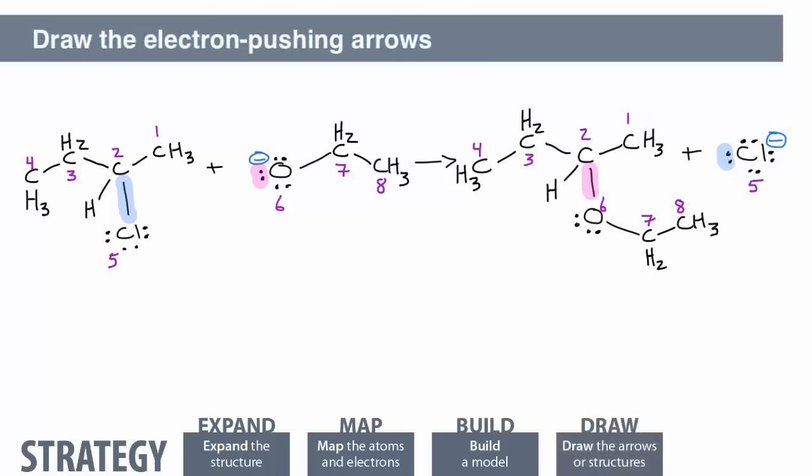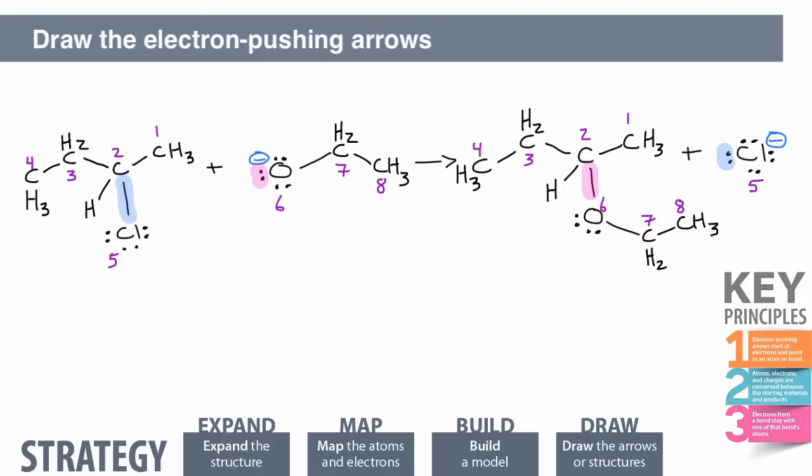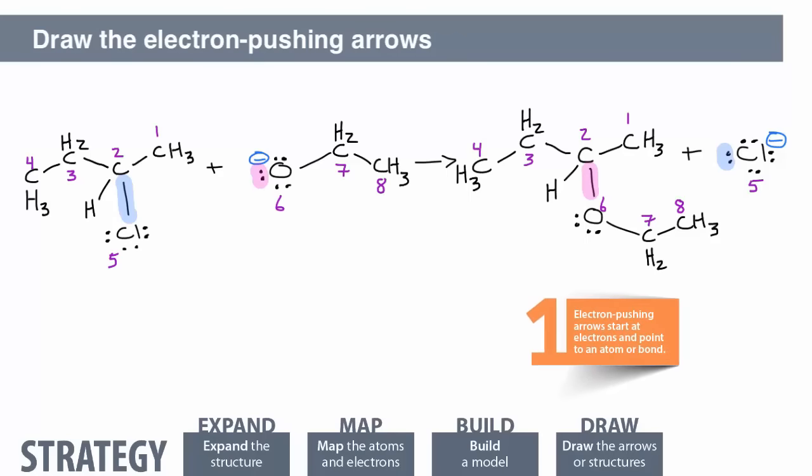Every new or broken bond must be described with an electron-pushing arrow, also called a curved arrow. These arrows always start with electrons and point to an atom or bond.